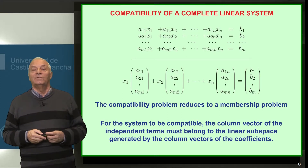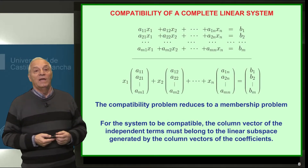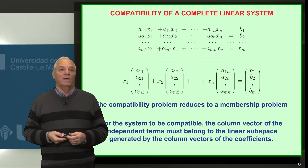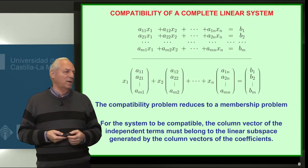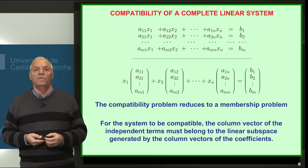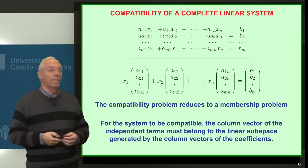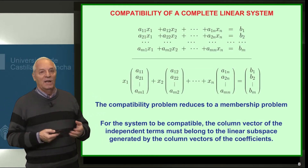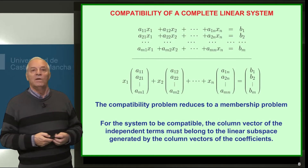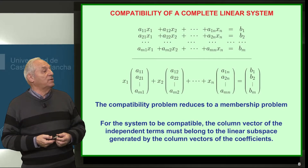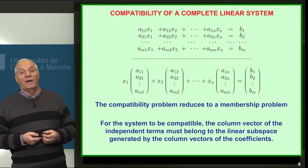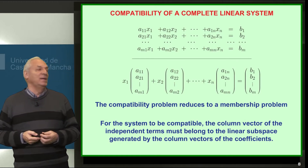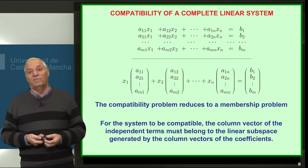Therefore, the important thing about these two ways of writing the system is that it makes very clear that the problem of system compatibility can be reduced to a problem of membership. If the vector (b1, b2, bn) belongs to the linear subspace generated by the column vectors of the coefficients, the system will be compatible, and if not, it will not be. To know if a system is compatible, just consider the column vectors and check if the vector of independent terms belongs to that subspace.